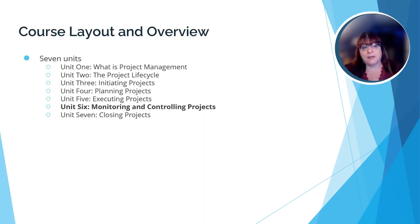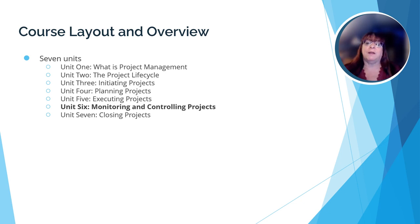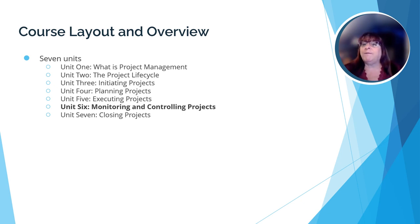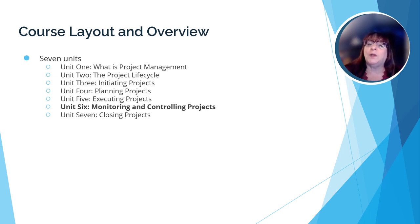There are seven units in this course. In Unit 1, we learned what a project is, who makes the decisions to take a project on, and what the triple constraint theory is. In Unit 2, we were introduced to the project lifecycle. In Unit 3, we looked at the initiation phase. In Unit 4, we looked closely at what goes into planning a project. In Unit 5, we looked at executing or implementing the project based on the plan we created in the planning phase. And here in Unit 6, we're going to look at the monitoring and controlling phase of the project.